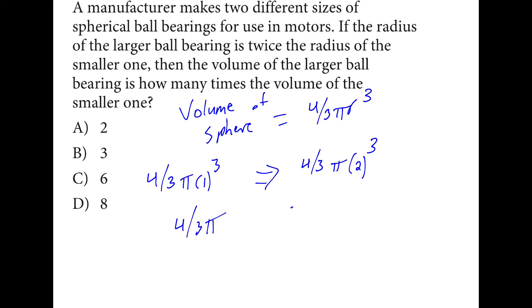2 cubed is 8, so that's 32 over 3 times π. You'll notice that the difference here is that we multiply by 8, which makes sense because the radius here is cubed, and we doubled the radius, so 2 cubed is 8.